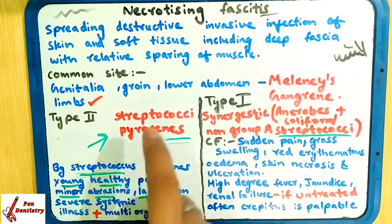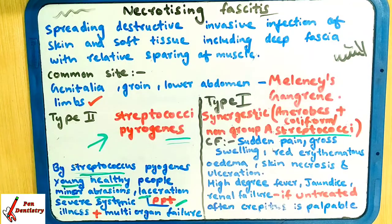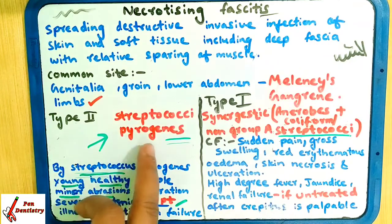Type 2 has no history of injury in most cases. It mostly occurs in the lower limbs.